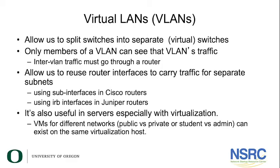Virtual LANs, or VLANs, are what allow us to split switches into separate virtual switches. The idea is only members of a VLAN can see that VLAN's traffic. Inter-VLAN traffic must go through a router. This, for example, will allow us to reuse router interfaces to carry traffic for separate subnets.